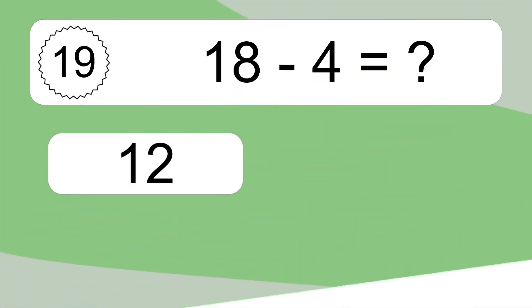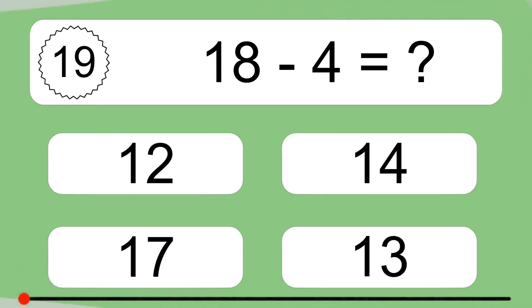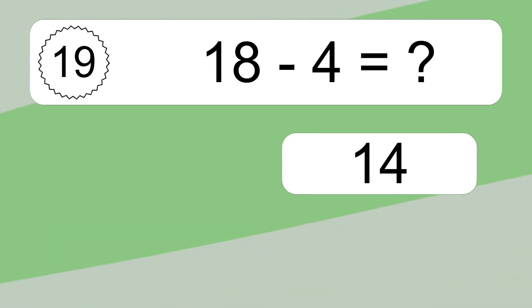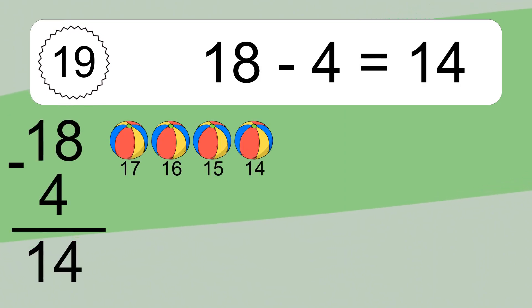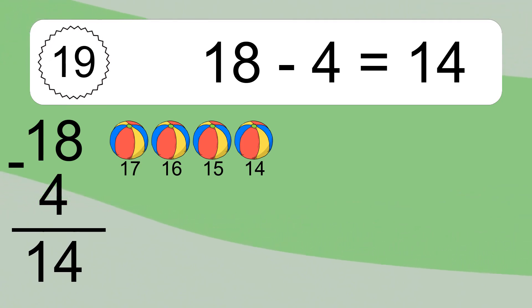18 minus 4 equals what? 18 minus 4 equals 14. Let's count it. 17, 16, 15, 14.